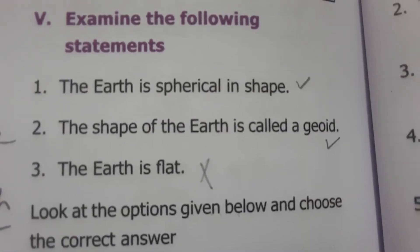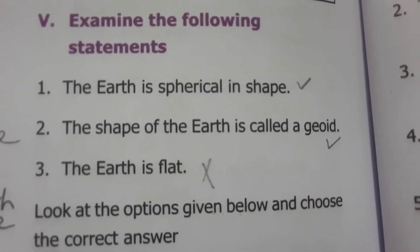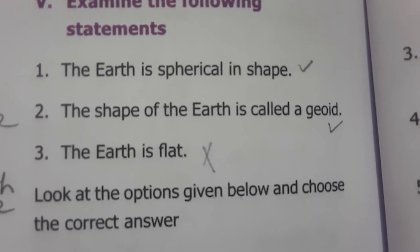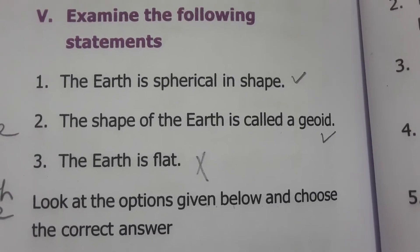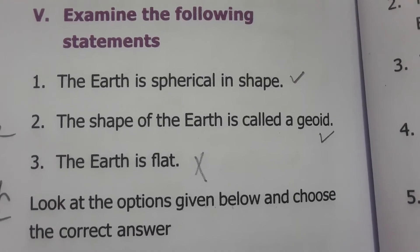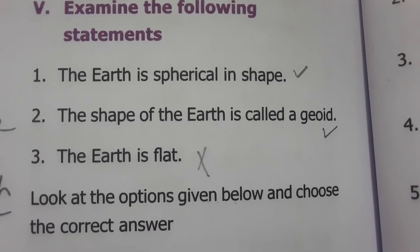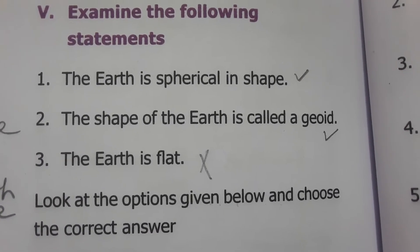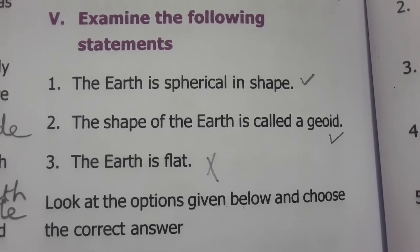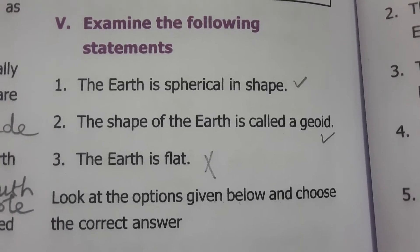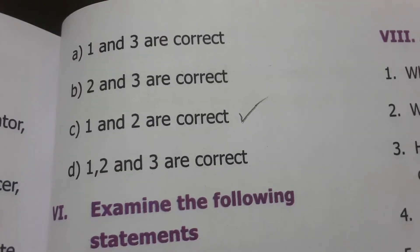Examine the following statements: Statement one — the Earth is spherical in shape — this is correct. Statement two — the shape of the Earth is called a geoid — this is also correct. Statement three — the Earth is flat — this is a wrong statement because the Earth is never flat; it is spherical in shape. So statements one and two are correct; option C is the answer.